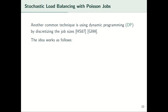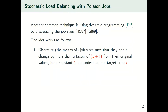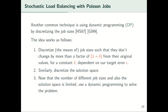Now that we know a deterministic PTAS won't work for every case, we can adapt other techniques to achieve a PTAS. There is another idea which uses discretization and dynamic programming. First, discretize the mean of job sizes such that they don't get too far from the real value — say, not more than 1 plus delta, where delta is a constant dependent on the target error epsilon. This limits the number of distinct job means. We also discretize the solution space. With both job sizes and solution space limited, we use dynamic programming to solve the problem.